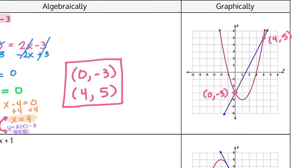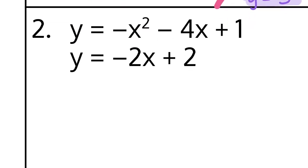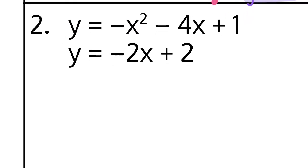Now let's look at our next example. This time I have the system consisting of the quadratic equation y equals negative x squared minus 4x plus 1, and y equals negative 2x plus 2. We can continue using substitution, but I wanted to show you that elimination will also work.